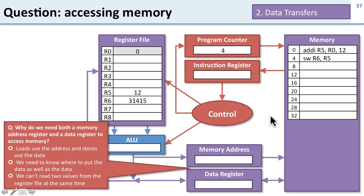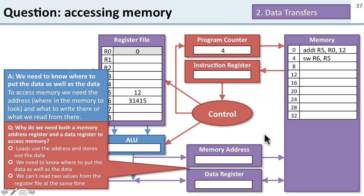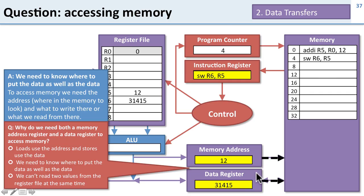A question about accessing memory: why do we need both a memory address register and a data register to access the memory? The reason is we need to know both the address — that is, where in memory do we look — and what data we are reading or writing. We need two pieces of information when we access memory. You can see this in the store word instruction, where we need both the memory address and the data in order to perform the store.